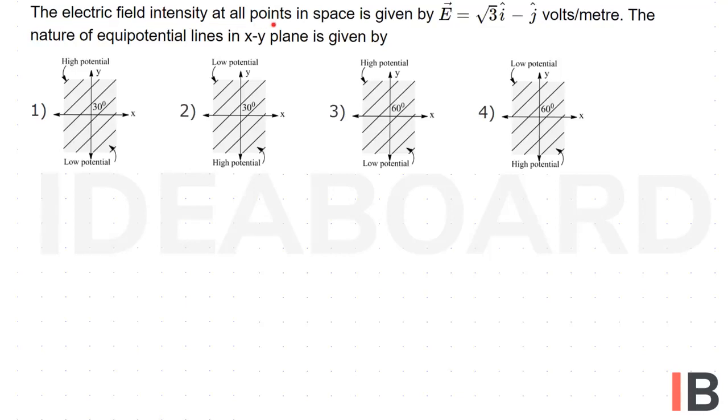The electric field intensity at all points in space is given by E bar equals root 3 i cap minus j cap volts per meter. The nature of equipotential lines in xy plane is given by: